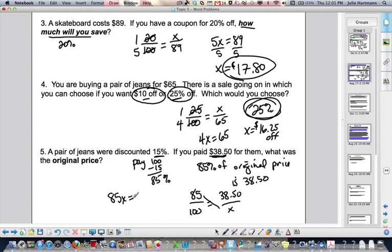You have 85x. 100 times 38.50 is $38.50. Divide that by 85. You get x equals $45.29.